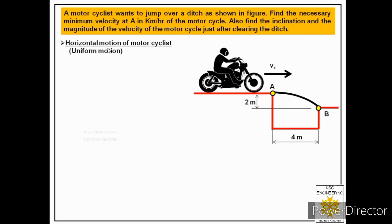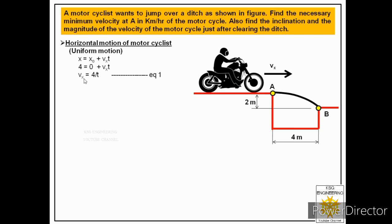Let us start with the horizontal motion of the projectile. The horizontal motion of the motorcyclist is uniform motion, so only one equation is applicable: x = x₀ + vx·t. Here x is the horizontal distance from point A to point B, which is four meters; x₀ is the initial distance, which is zero; vx is the velocity in the x direction; and t is the time taken. Substituting gives 4 = vx·t, so vx = 4/t. We have two unknowns, so we call this Equation 1.